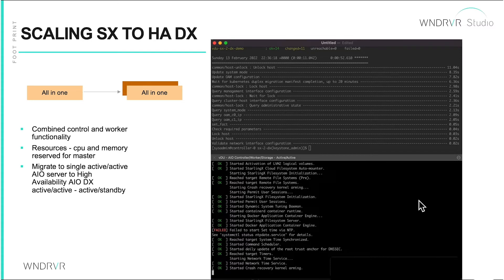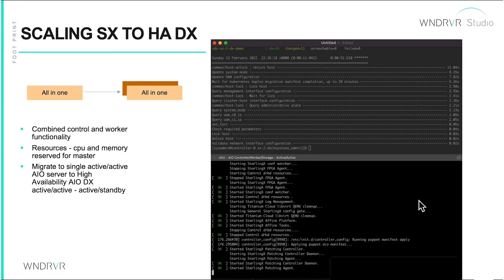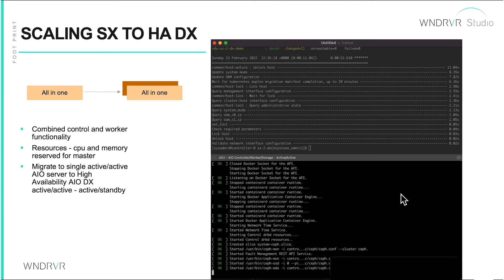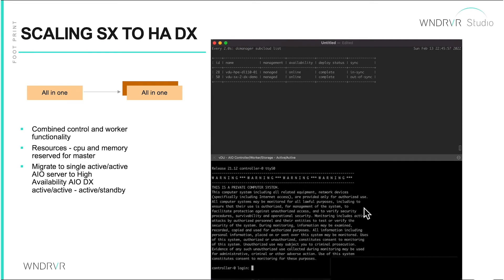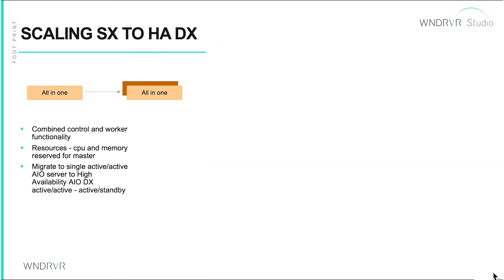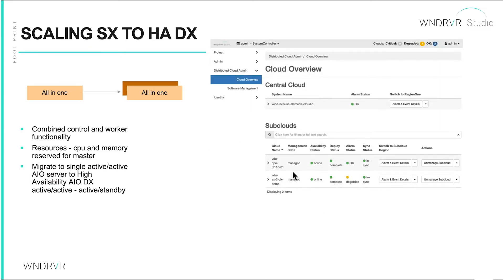The window at the bottom is showing what has happened again at the edge site. After the configuration change, it has rebooted, locked itself, reconfigured, rebooted, and then come back online. This means we lost that server for approximately 20 minutes. Now, if we go back and look from the UI perspective, we'll be able to see that this conversion has happened. That's our SX to HADX demo.